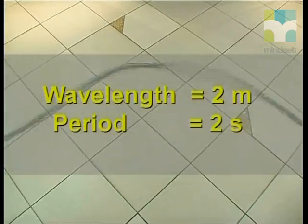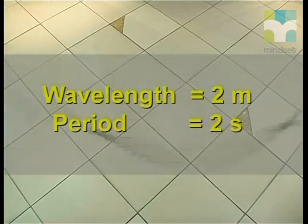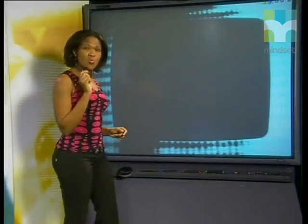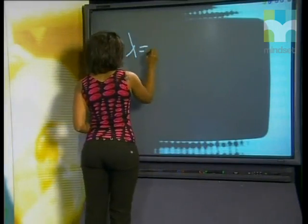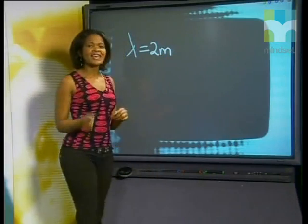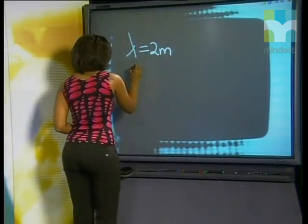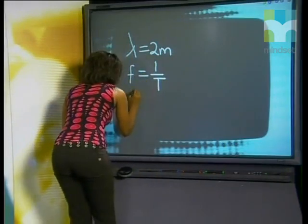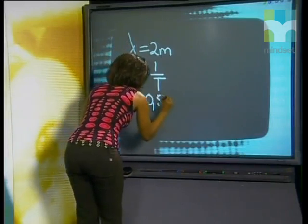A wave in a slinky has a wavelength of 2 meters and a period of 2 seconds. Calculate the wave speed. First let's write down the information we were given. The wavelength or lambda is 2 meters. The period of the wave is 2 seconds. But we also know that frequency is equal to one over T, which means frequency is equal to 0.5 Hertz.